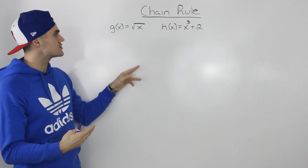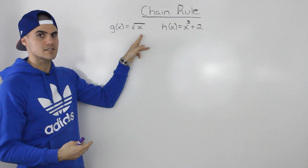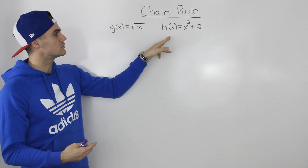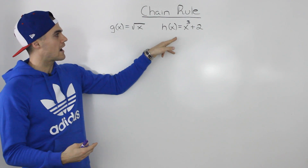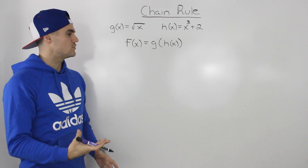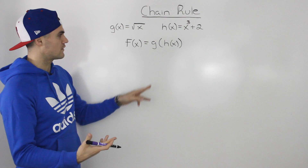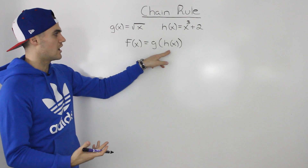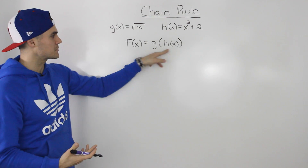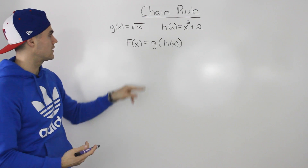Let's say we have these two functions: g of x is equal to the square root of x, and h of x is equal to x to the power of three plus two. Now let's introduce a new function f of x equals the composite function g of h of x. What does g of h of x mean? How are we combining these two functions?